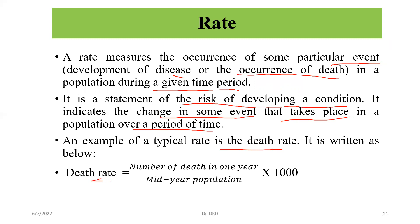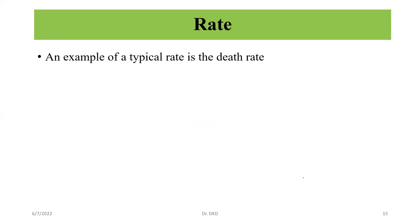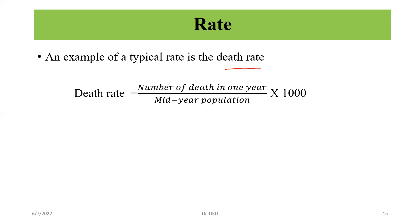An example of a typical rate is the death rate. It can be calculated as: number of deaths in a year divided by the mid-year population, multiplied by 1000. So in the denominator, we take the mid-year population.